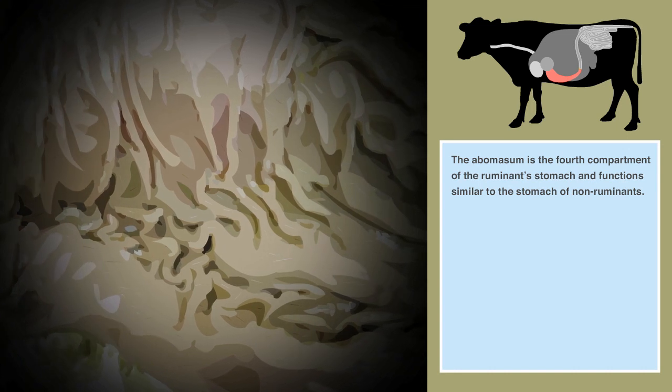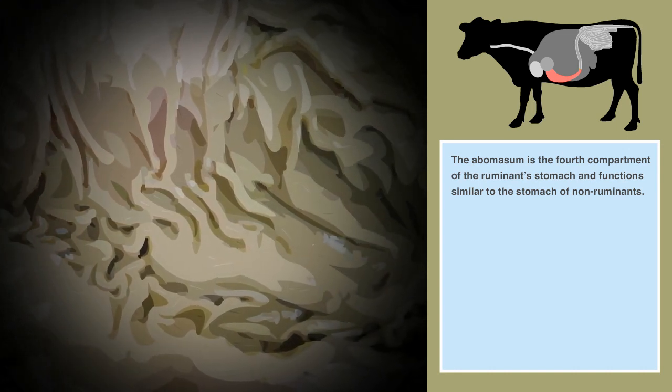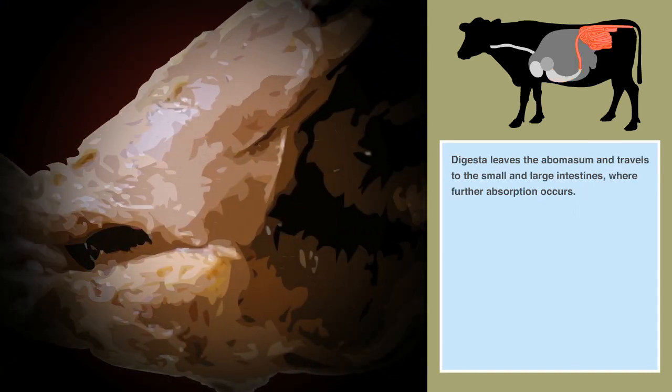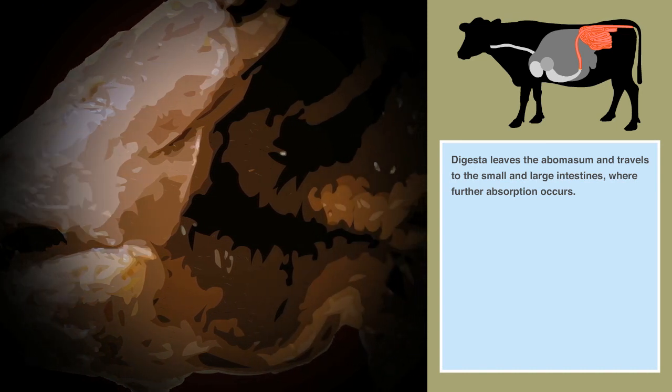The abomasum is the fourth compartment of the ruminant stomach and functions similar to the stomach of non-ruminants. Digesta leaves the abomasum and travels to the small and large intestines where further absorption occurs.